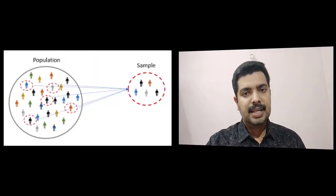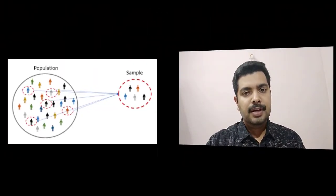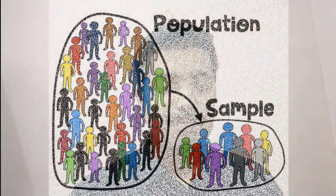So what do researchers do? They take a small sample — a small number from the entire population — and do research on that particular group. Later, they try to extrapolate and say that the characteristics of this small sample population are similar to the main population. This particular process is called sampling.